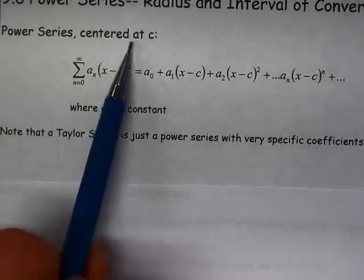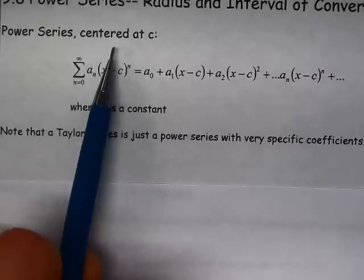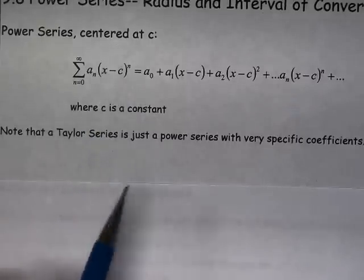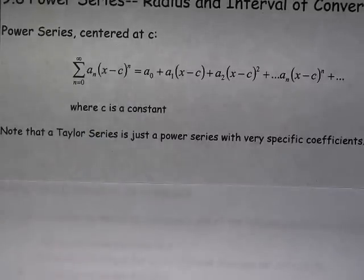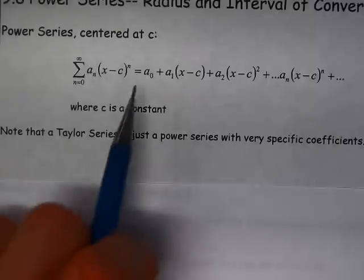And c is the value at which the power series is centered. So when we talked about Taylor polynomials, we talked about centering that polynomial at a specific value. We called it A in that section. Here, we're calling it C.